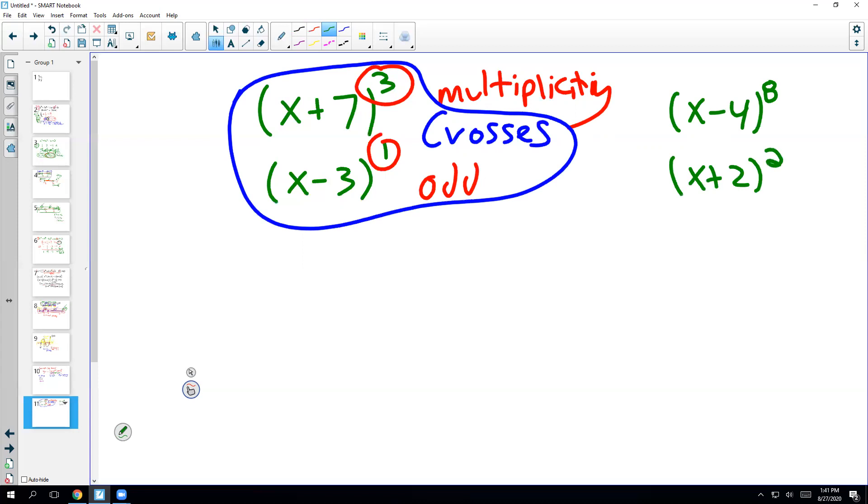Anyway, let me back up. The fact that these numbers are odd doesn't matter. So this could have been a 4. That doesn't matter. This could have been a 3. Those numbers don't matter. It's really the multiplicities. When the multiplicity is even, it is a bounce.